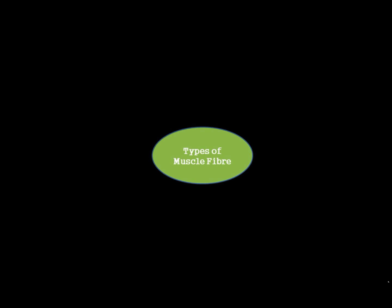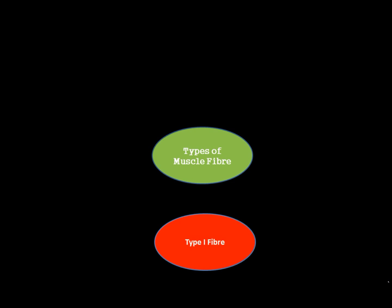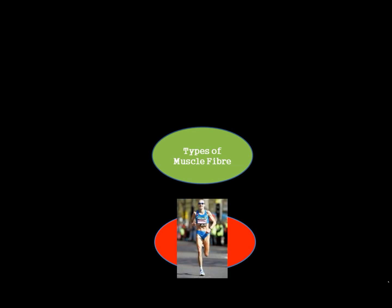These fibres come in three different forms. The first type is called Type 1 Fibres. These are the fibres that are quite commonly red, and importantly are very much used in aerobic activities — long distance, so for example marathon running or long distance cycling.